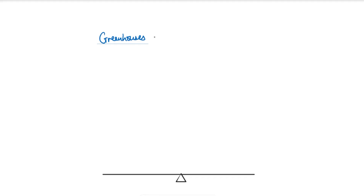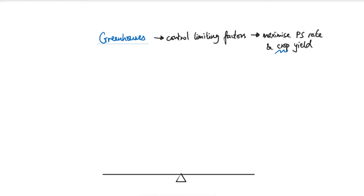Now we move to the concept of greenhouses. Now that we know the environmental factors that can affect the rate of photosynthesis, farmers can design a greenhouse to control those limiting factors. By doing so you can maximize the rate of photosynthesis, which means maximizing crop yield. Crop yield simply means how many crops or plants you can actually grow to sell. The concept of greenhouses for farmers is also about cost — it's not just about the science of photosynthesis but about how to financially minimize cost while maximizing crop yield.